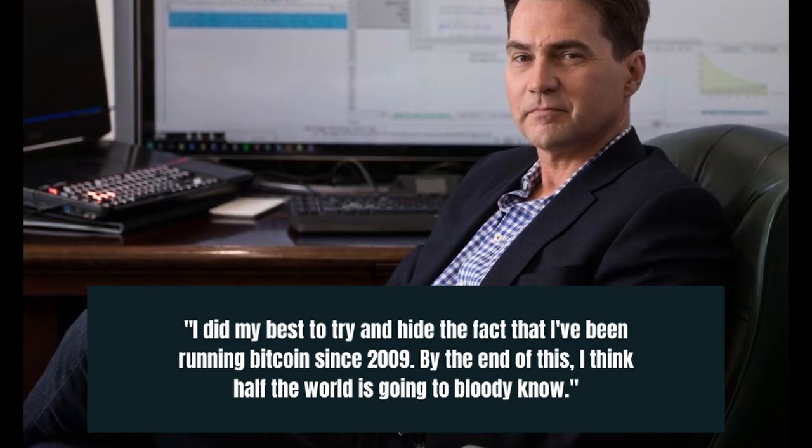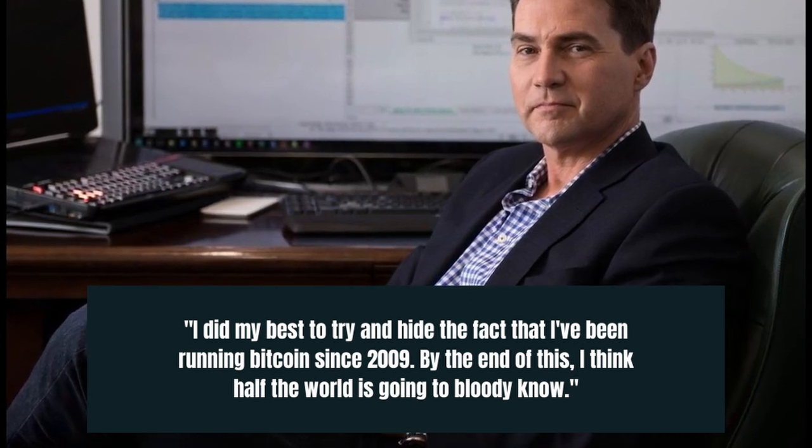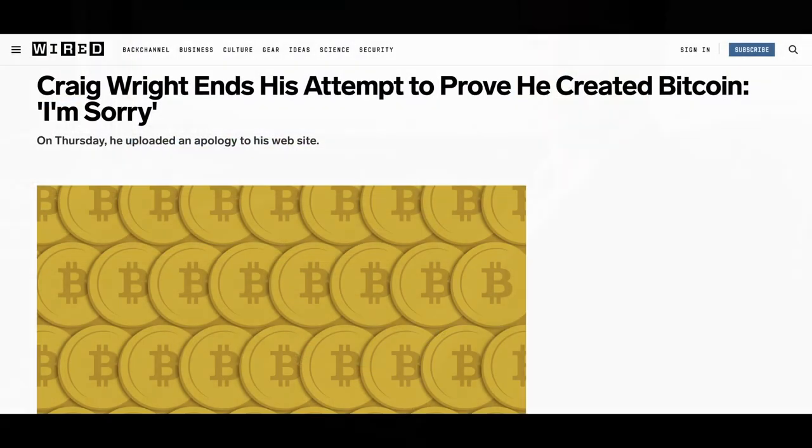By the end of this, I think half the world is going to bloody know. Those claims were soon thrown into doubt. Wired magazine reported several inconsistencies in Wright's story. For example, the blog entries appeared to be backdated, and evidence also suggested that public encryption keys linked to Satoshi Nakamoto were also backdated. Even Ethereum co-founder Vitalik Buterin, who is otherwise reticent about politics in the cryptocurrency world, came out against Wright, publicly calling him a fraud.